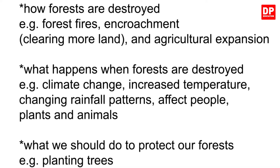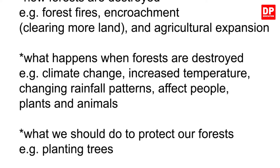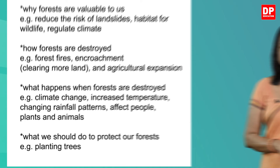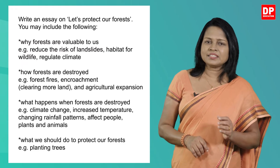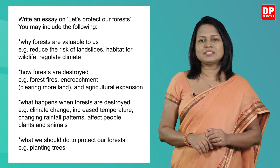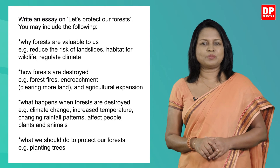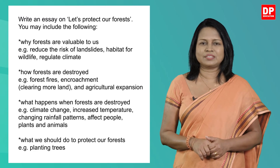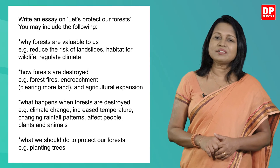Then, what happens when forests are destroyed? For example, climate change, increased temperature, changing rainfall patterns — all affect people, plants and animals. And what we should do to protect our forests, for example, planting trees. Remember all the tips I gave you and write your essay. As the outline is already given in the question itself, you can straight away start writing. Remember to write a good thesis statement, introduction and a good conclusion. Write around 200 words to get full marks for content. Now pause the video and write the essay.